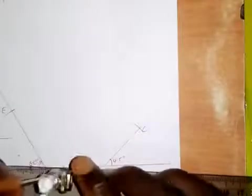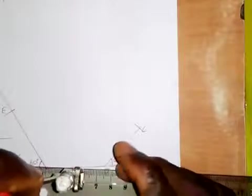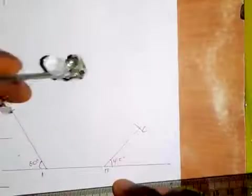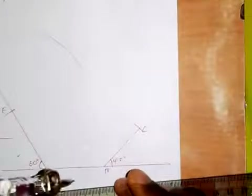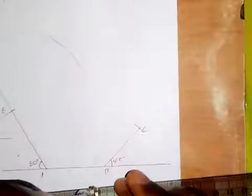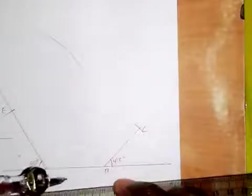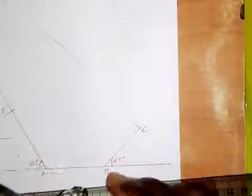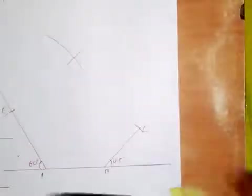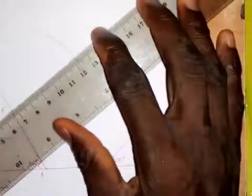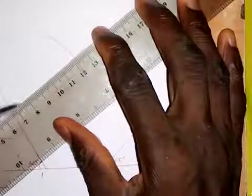I will take a measurement of 55 millimeters. I put the pin point at E and make an arc. Then I take a measurement of 65 millimeters, put the point at C, and make an arc. I then join these intersection points together to locate point D.